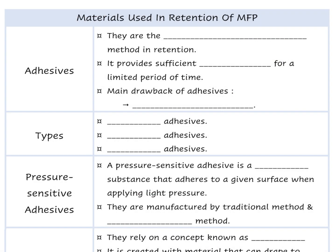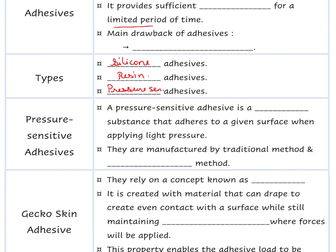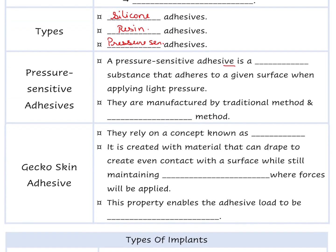Adhesives are the most commonly used method in retention. They provide sufficient retention for a very limited period of time, and the main drawback is accumulation of dust particles at the interface of skin and adhesive. Patient compliance is not very good with adhesives. Implants are more sophisticated ways of providing retention. Adhesive types include silicone-based, resin, and pressure-sensitive adhesives. A pressure-sensitive adhesive is a very tacky substance that adheres to a surface even with light pressure - similar to those used to attach wigs; they are manufactured by hot melting method.